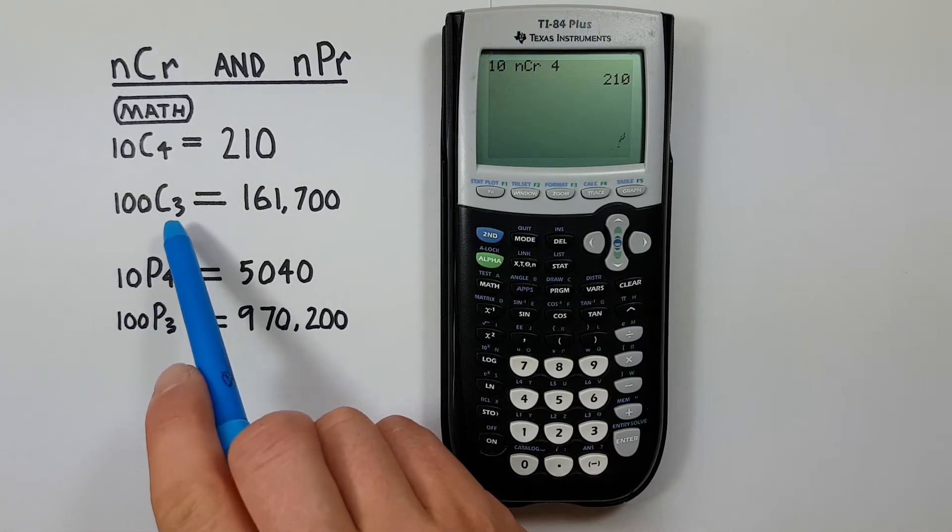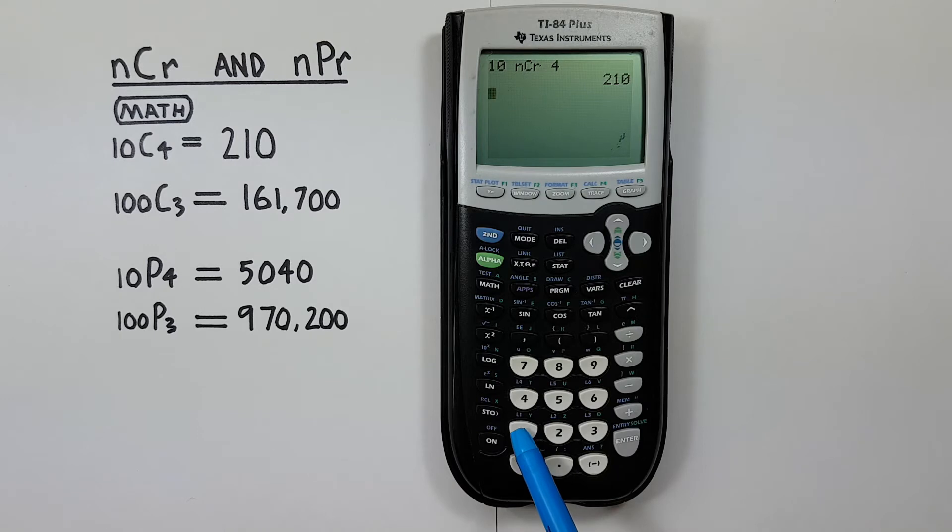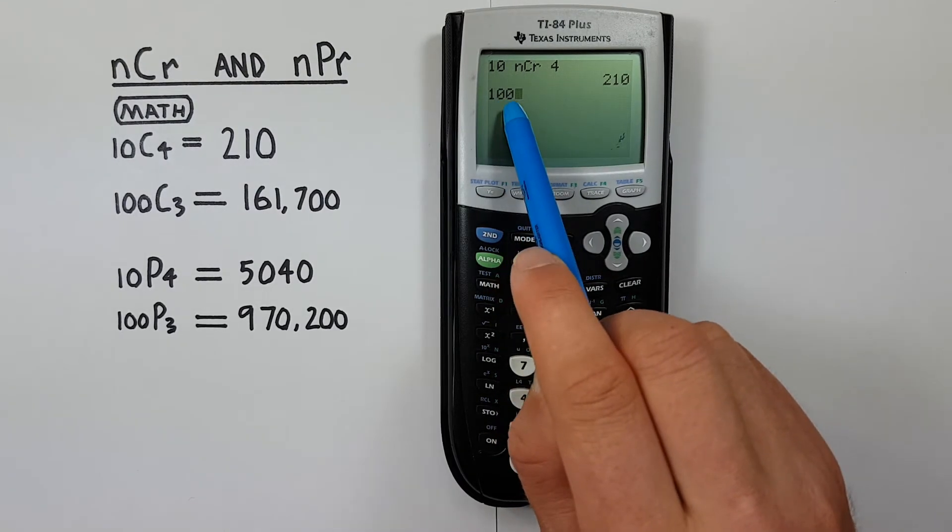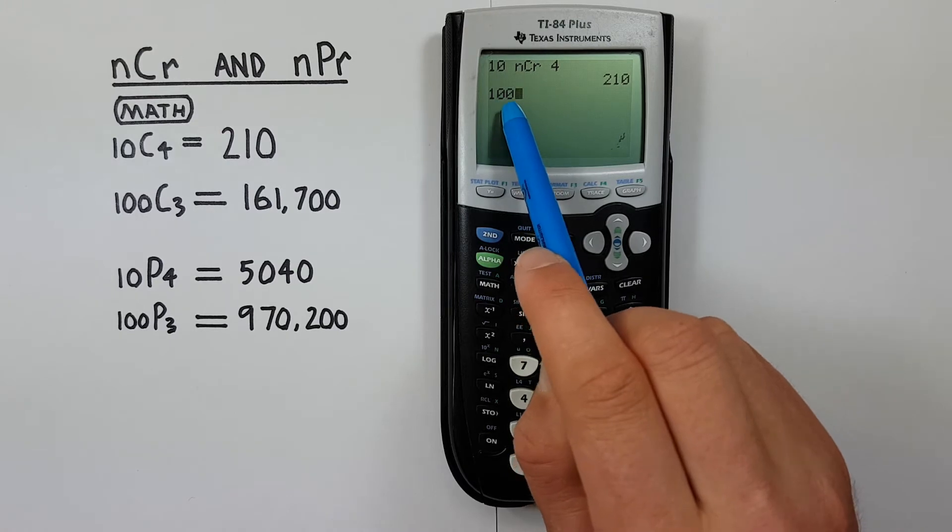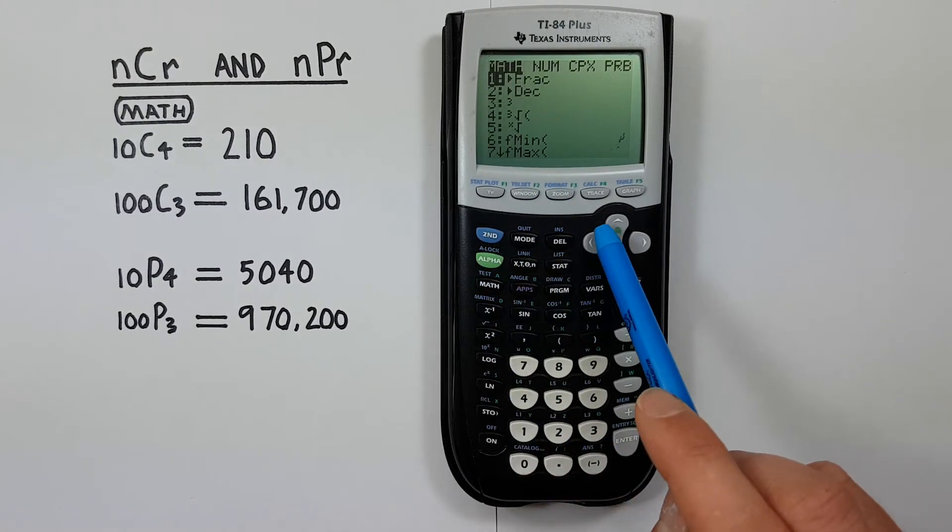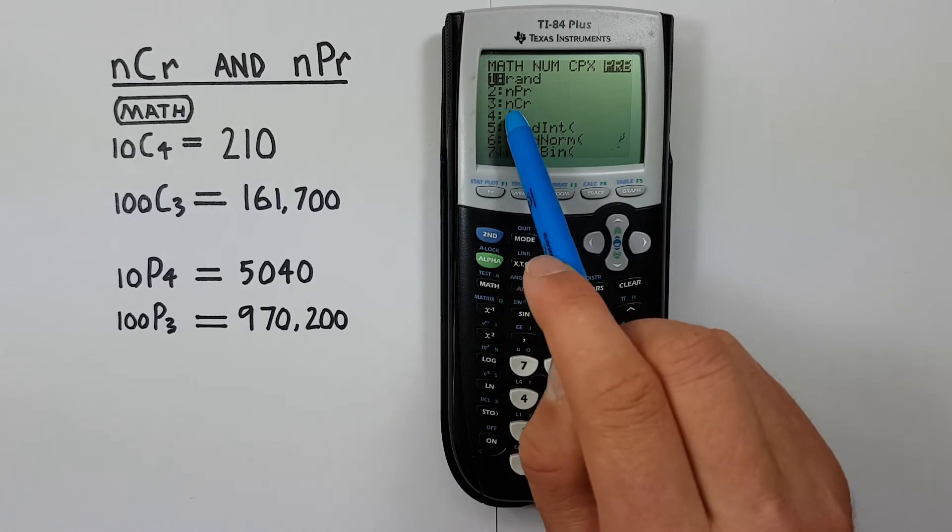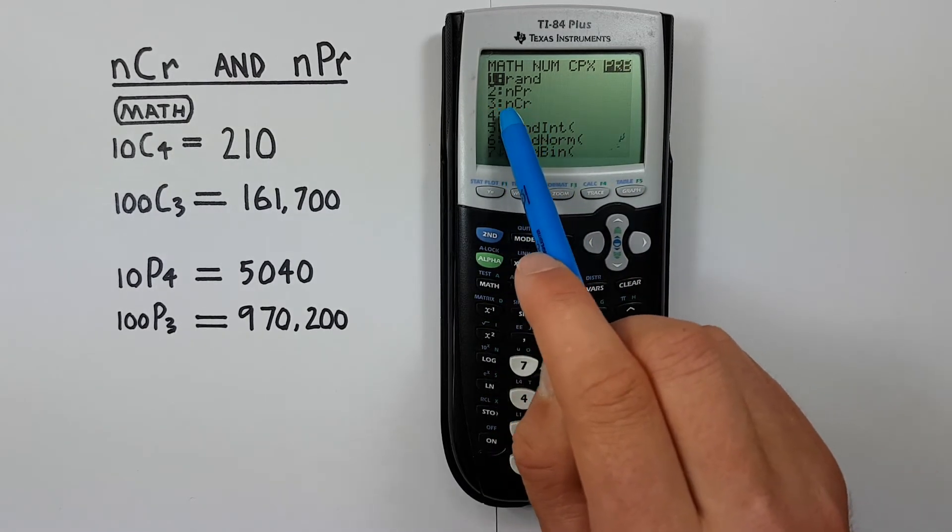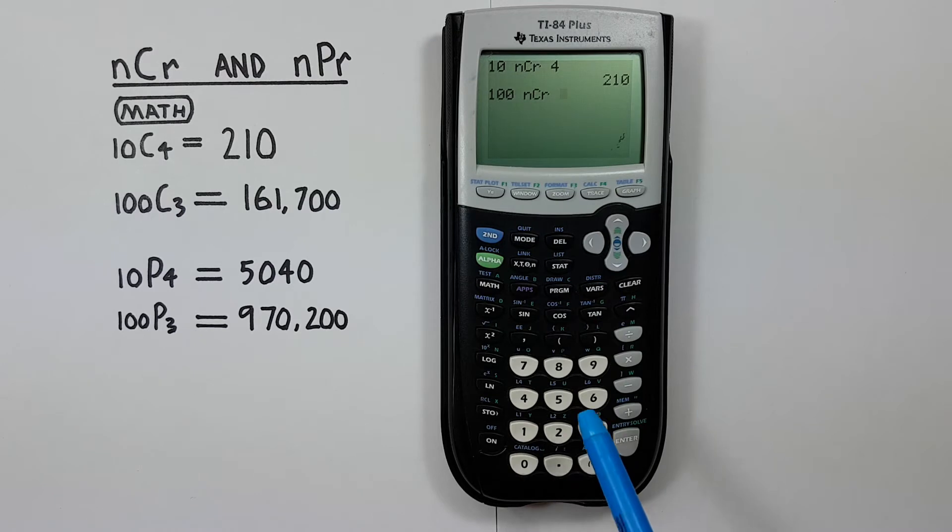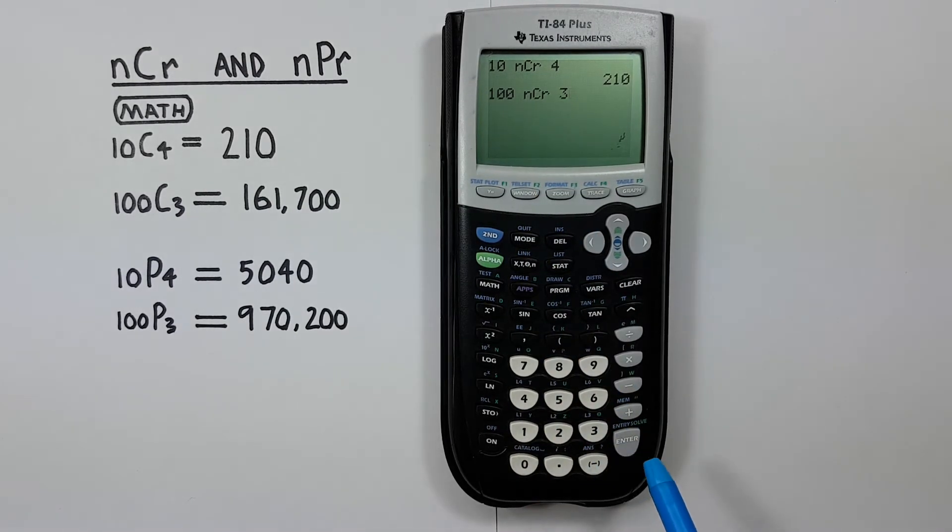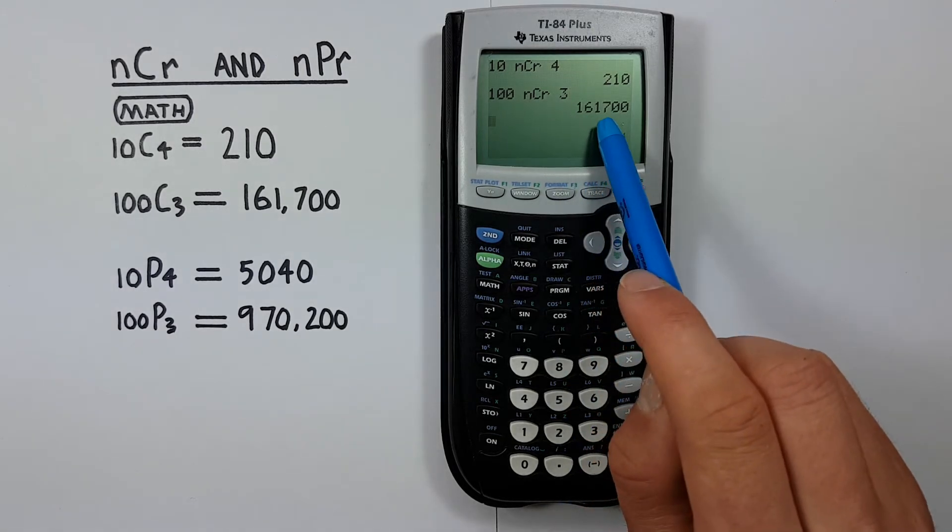How about 100 choose three? Same way. First we enter the number of objects before we choose the nCr. Again that's important. Then math, probability, and we don't actually have to scroll down here. Since we see nCr is the third option we can just press three and that'll select it for us. 100 choose three and we get 161,700.